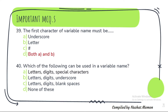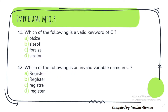Question 40: Which of the following can be used in a variable name? In a variable name, letters, digits and special characters can be used. Question 41: Which of the following is a valid keyword of C? The correct option is B — sizeof. Question 42: Which of the following is an invalid variable name in C? That is option D.